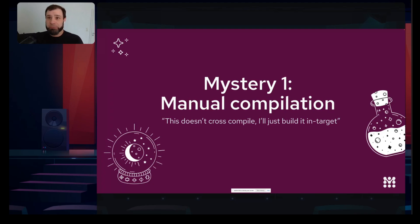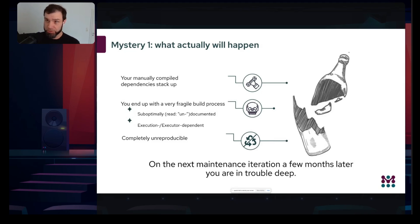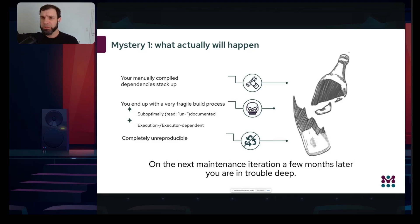The usual thing people do is: it doesn't cross-compile, so they just grab the embedded target and compile on it directly. What actually happens is: you do the first cross-compile on the target, which rips it out of the original setup. Everything that comes after also has to be manually cross-compiled on the target because your original build process won't see it.